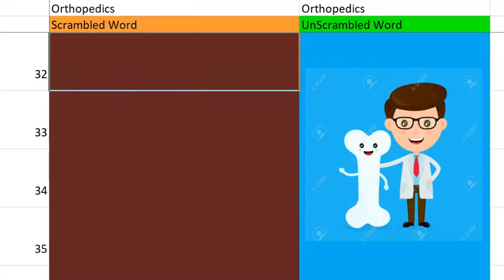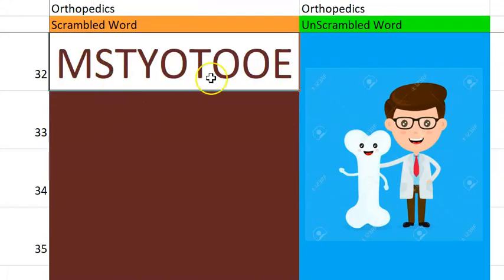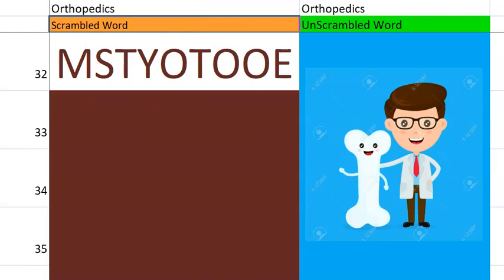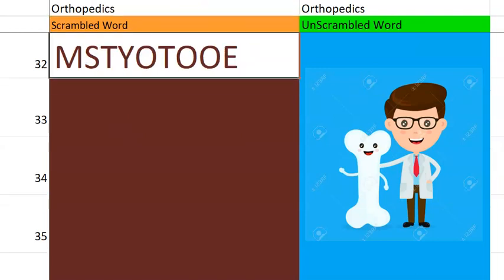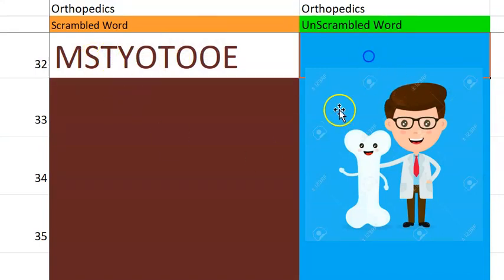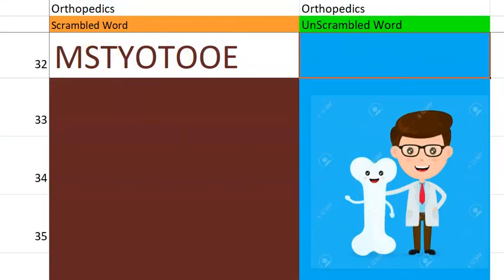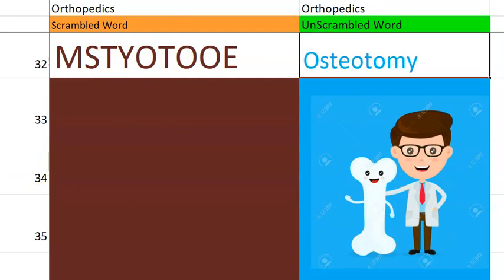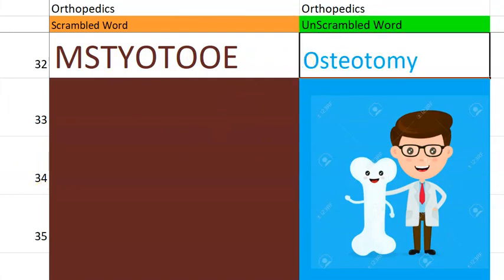Now let us go to the 32nd one. It is starting with O — osteo again. Osteotomy. What is osteotomy? Cutting and reshaping the bone. Osteotomy.